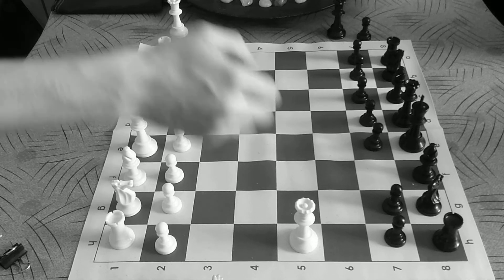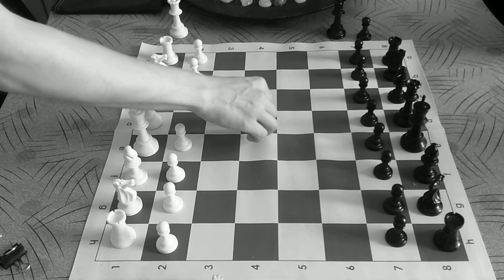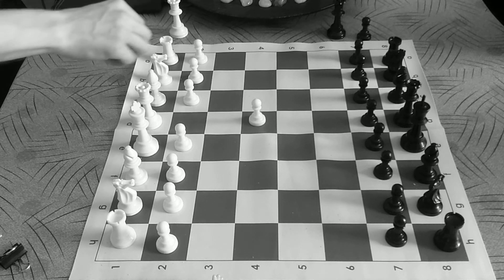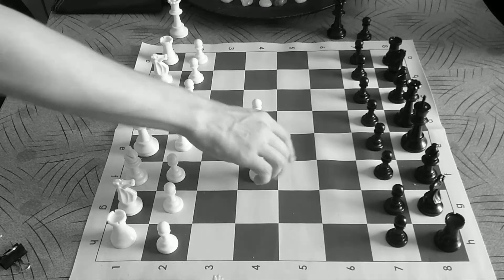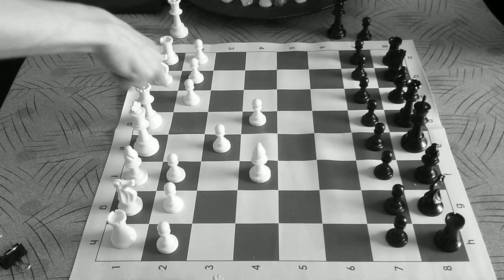And then the London opening starts with d4, also with white. And then it's crucial that you get the dark square bishop out first before you move this pawn because it would block its path otherwise.